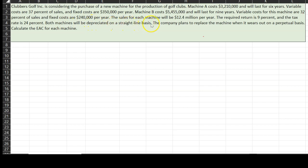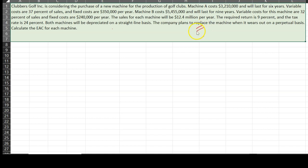The required rate of return is 9% and the tax rate is 24%. Both machines will be depreciated on a straight-line basis. Importantly, the company plans to replace each machine when it wears out on a perpetual basis. This means if machine A runs its useful life of six years, you will need to buy another machine A, and the same for machine B. Because of this, you cannot compare the two directly based on NPV since these are investments of unequal lives — six years is not the same as nine.